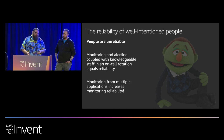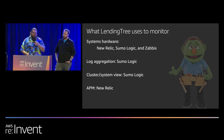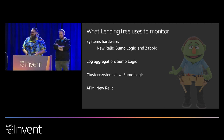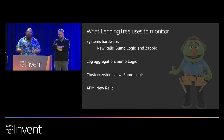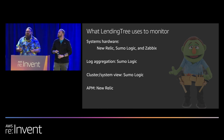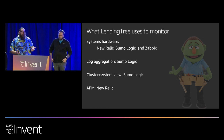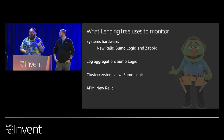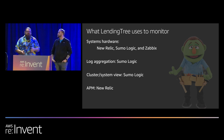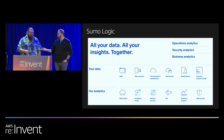What do we use to monitor at LendingTree? New Relic's APM tells us what's going on inside the software — it does have a Kubernetes piece, but it's more geared towards how applications are performing and not how the system as a whole is performing. If I want to see how my pod running PHP is doing, it's great — it can dig in and tell me what calls are taking the longest. If I want to look at the system, I'm generally in Sumo. Sumo does our log aggregation; Zabbix for CPU and memory.